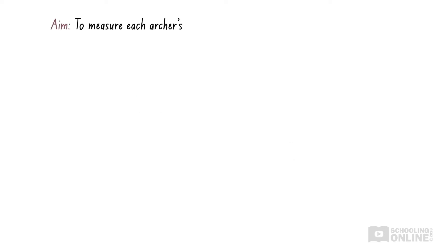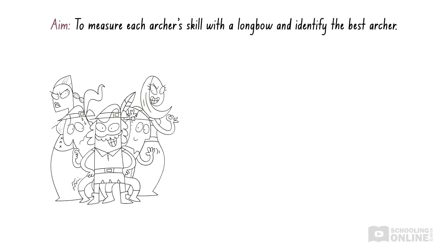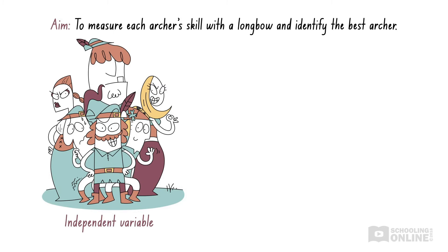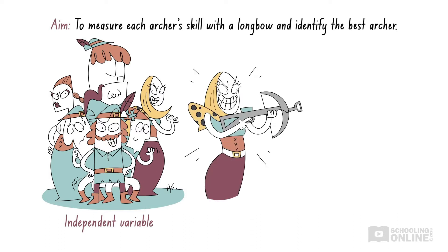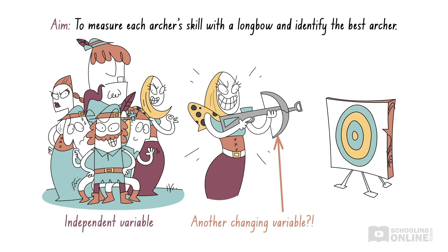In the archery competition, the aim is to find who is best at shooting arrows with a longbow. The independent variable is the archer — whether Robin Hood, Too Tall Trevor, or someone else. But when it was Chelsea's turn, she introduced another changing variable: the type of bow. This means two factors were changed — the archer and the type of bow. We cannot attribute her good score to just her archery skill, as using the crossbow may have contributed. Therefore, the results from her round are invalid.